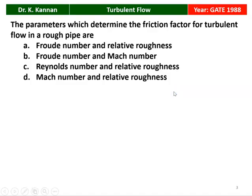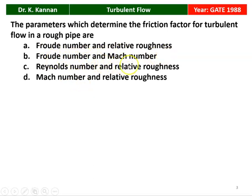The first question appeared in 1988. The parameter which determines the friction factor for turbulent flow in a rough pipe — there are four options: Froude number and relative roughness; Froude number and Mach number; Reynolds number and relative roughness; Mach number and relative roughness.